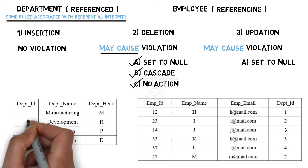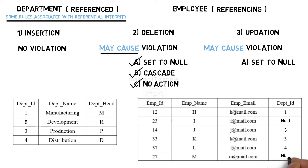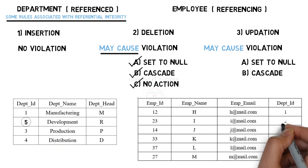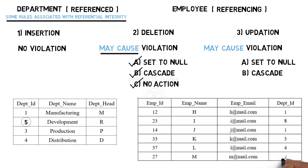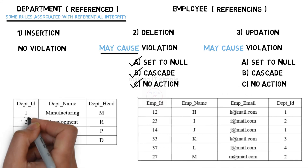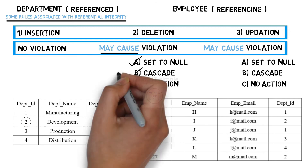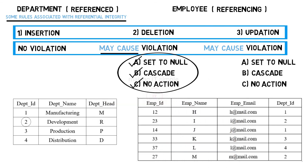The same rules used for deletion can be used here. ON UPDATE SET NULL — when we update department ID to 5, the referencing values will be updated to null. ON UPDATE CASCADE — when we update department ID to 5, all referencing values will also be updated to 5 automatically. ON UPDATE NO ACTION — when we try to update department ID to 5, no update will be performed and the system will throw an error. So when we perform insertion, deletion, or updation on the reference table, these scenarios may occur, and these rules are used to handle violations of referential integrity.